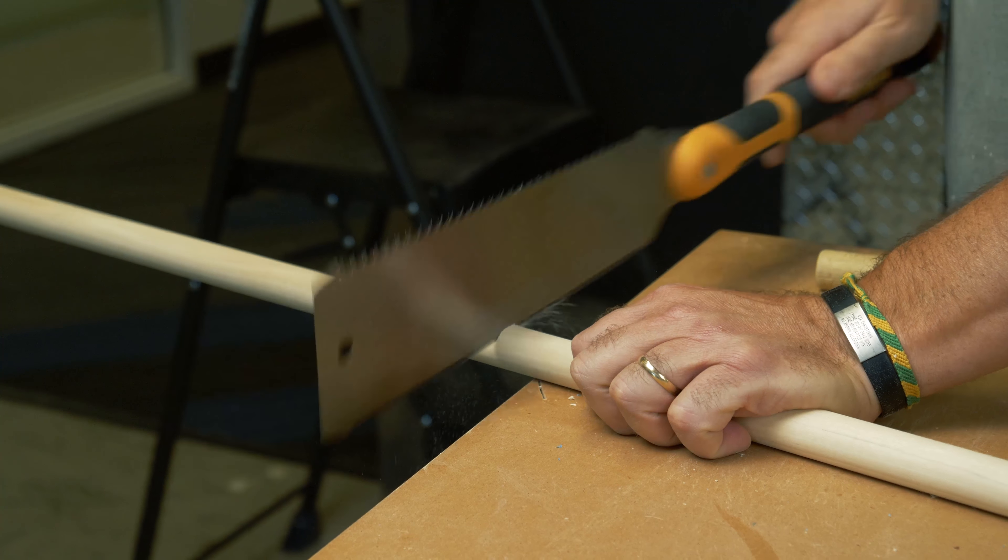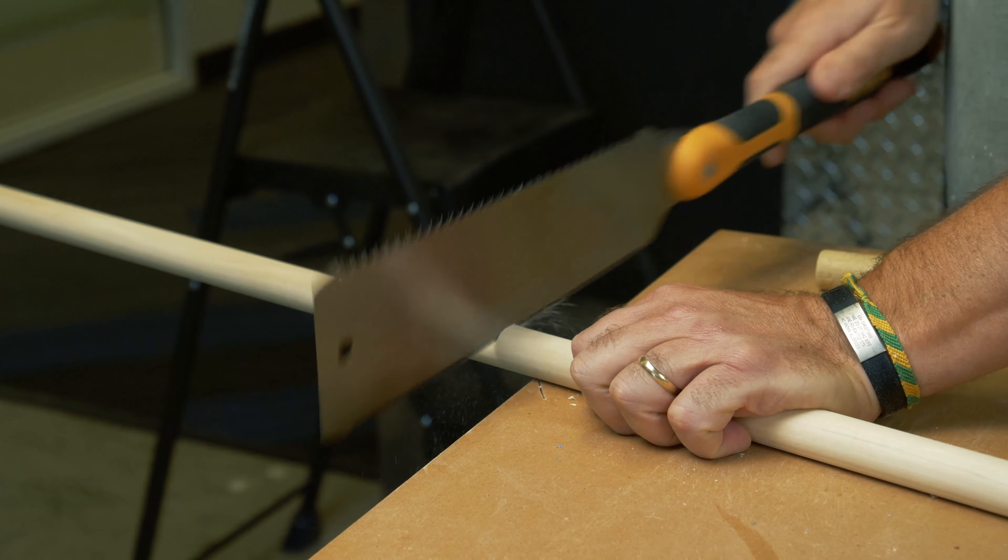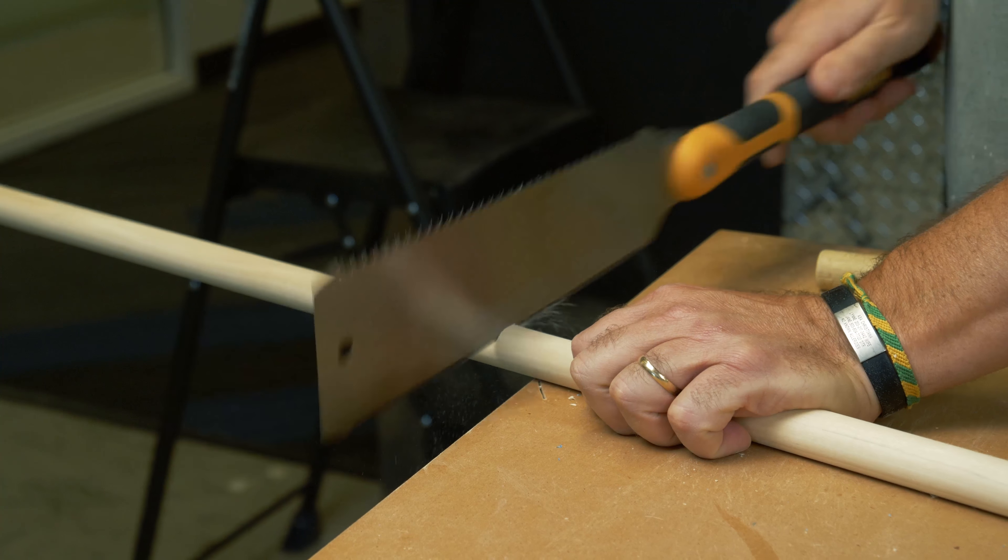The next step is to use a few screws to attach that 3D printed tripod joint to the underside of the table. Feel free to drill out the screw holes if they aren't big enough.